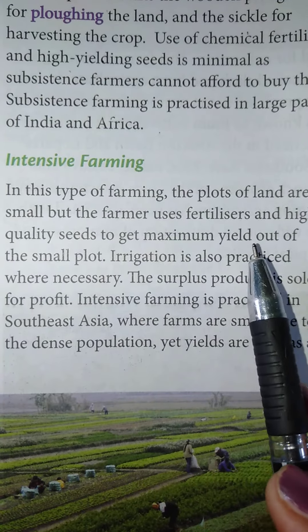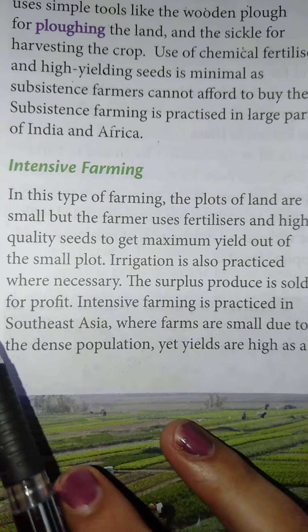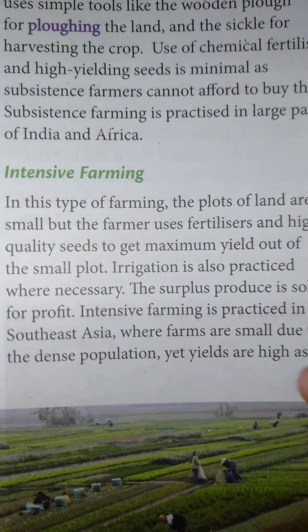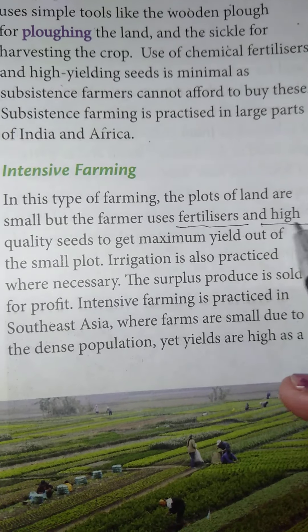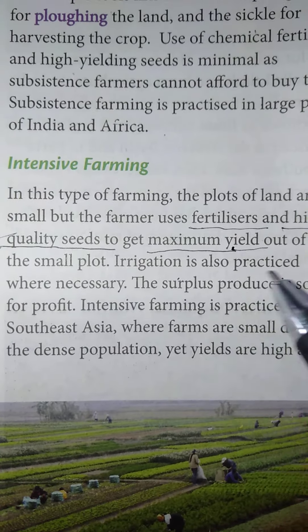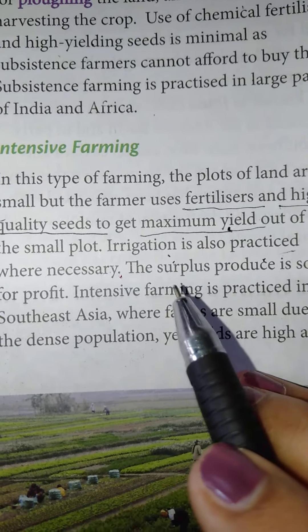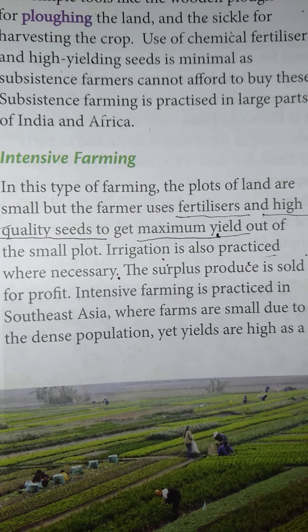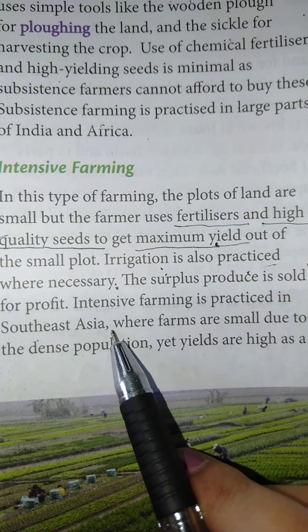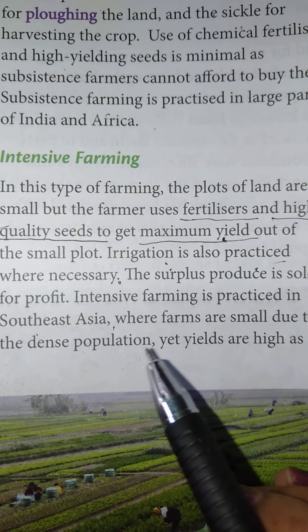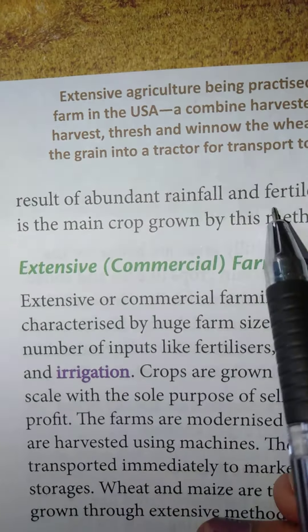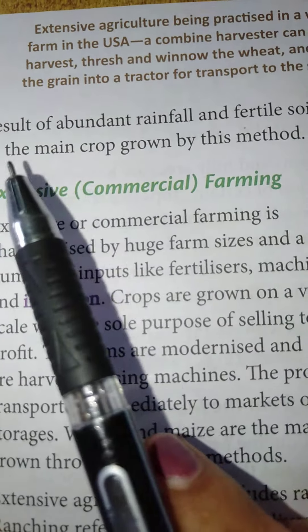What is intensive farming? In this type of farming, the plots are small, but farmers use fertilizer and high-quality seeds to get maximum yield out of the small plot. Due to overpopulation and the use of modern techniques like fertilizers and high-yielding variety seeds, maximum yield is achieved from small plots. Irrigation is also practiced where necessary, and the surplus produced is sold in the market. In Southeast Asia, plots are small due to dense population, yet yields are high as a result of rainfall and fertile soil. The main crop is rice.